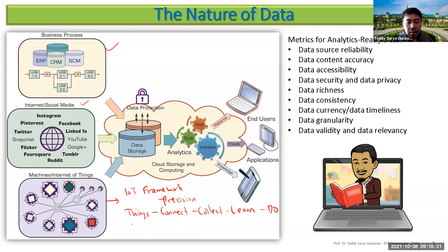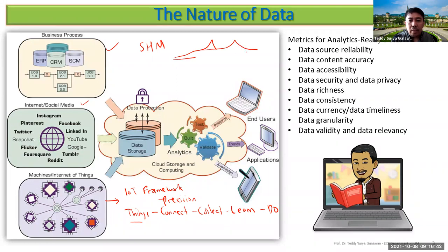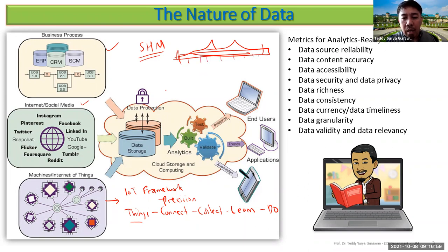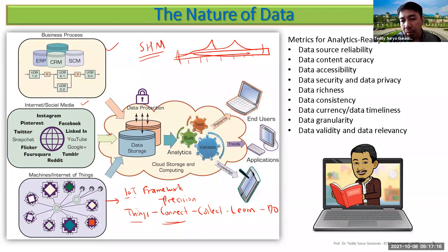IoT starts with 'things' — sensors, microcontrollers, and so on. For example, you can do structural health monitoring by putting GPS and vibration sensors on a bridge, like the Surabaya-Madura bridge. You then connect them — using LoRa or other communication technologies, or Wi-Fi access points placed along the bridge.